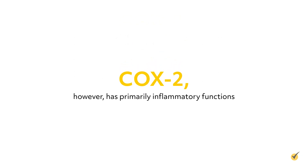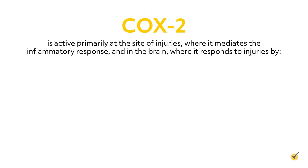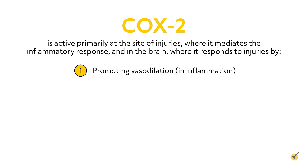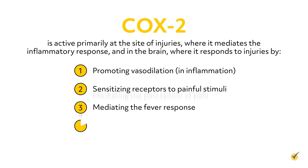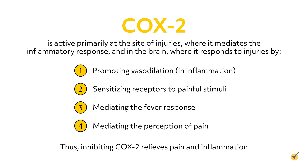COX-2, however, has primarily inflammatory functions. COX-2 is active primarily at the site of injuries, where it mediates the inflammatory response, and in the brain, where it responds to injuries by promoting vasodilation in inflammation, sensitizing receptors to painful stimuli, mediating the fever response, and mediating the perception of pain. Thus, inhibiting COX-2 relieves pain and inflammation.